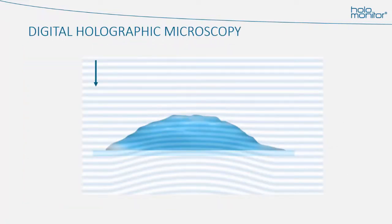So how does digital holography work? Think of light as a wave. The striped lines in the image are wave fronts, moving in the direction of the arrow. The wave fronts will slow down when passing through the cell. After having passed through the cell, the light will resume its speed, but it will still have been delayed, shown in the striped pattern below the cell in the image. That delay is what we measure — it is called a phase shift.